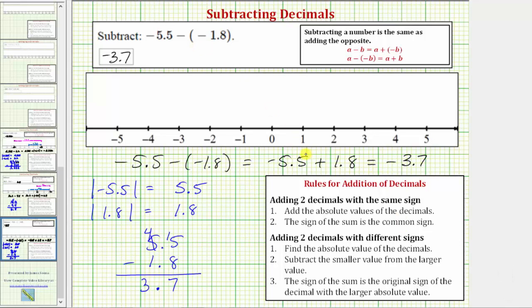To model negative 5.5, we'd start at zero and move left 5.5 units to negative 5.5.